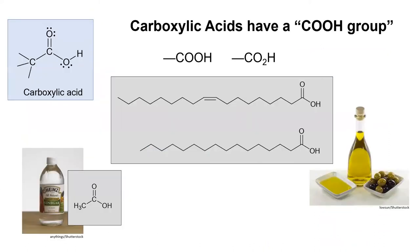Another common organic group is the carboxylic acid. A carboxylic acid has a carbon that forms bonds to two oxygen atoms. One of the oxygen atoms has a acidic hydrogen, which gives this the properties of an acid. To indicate a carboxylic acid, we use COOH in the molecular formula.